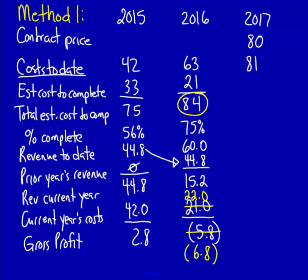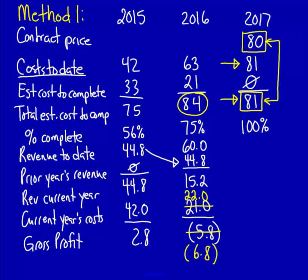Estimated costs to complete are zero because the contract is finished. Total costs: $81. Compare the total estimated cost to the selling price: total costs are $81 and the selling price is $80, meaning we've lost a total of $1 on this construction contract. Percentage complete is 100% (cost to date divided by total estimated costs). Revenue to date: 100% times the selling price equals $80. Prior year's revenues are $60, so current year's revenue is $20.